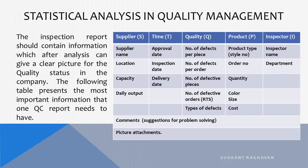Suppliers: supplier name, location, capacity, daily output. Time: approval date, inspection date, delivery date. Quality: number of defects per piece, number of defects per order, number of defective pieces, number of defective orders, types of defects. Product: product type, style number, order number, quantity, color, size, cost. Inspector name, department, comments, suggestion for problem solving, picture attachments.